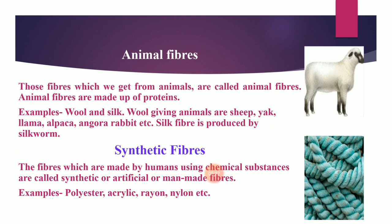Animal fibers are very important in this class. Animal fibers are fibers we get from animals, and they are made up of proteins. Examples of animal fibers are wool and silk. The main wool-giving animal is sheep. Other wool-giving animals include yak, llama, alpaca — which belong to the camel family — angora goat, angora rabbit, and Kashmiri goat. Silk fiber is produced by the silkworm.